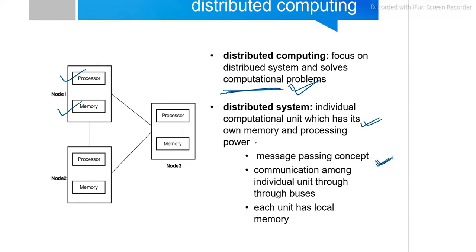Distributed computing focuses on distributed systems to solve computational problems. A distributed system is one where each individual computational unit has its own memory and processing power. Nodes communicate with each other through message passing, which is an important concept in operating systems. Communication among nodes occurs through high-speed internal buses.